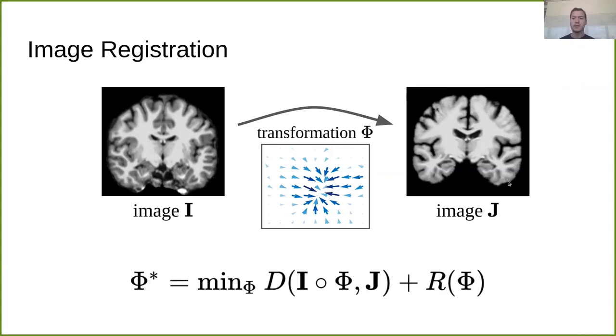And this is an unsupervised setting, so we do not have a ground truth transformation. All we are presented with is the two images and we have to infer the transformation.